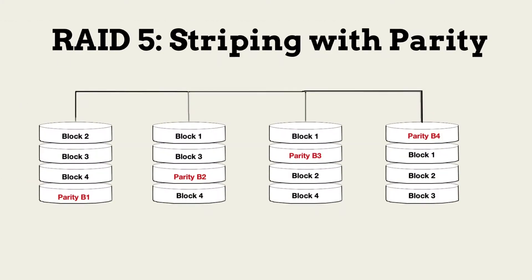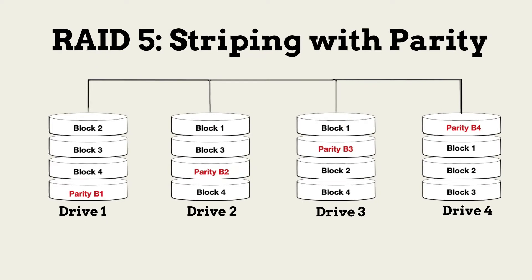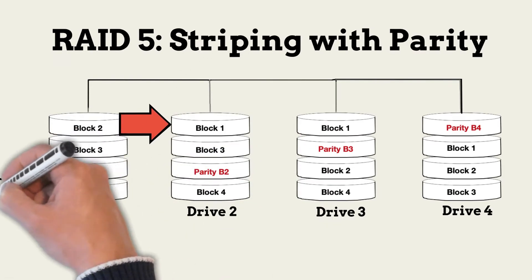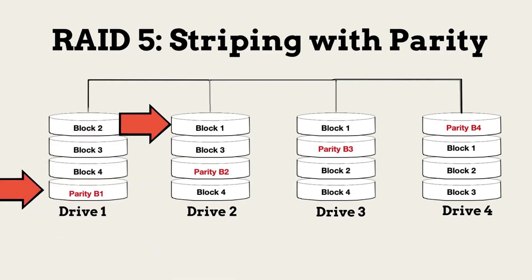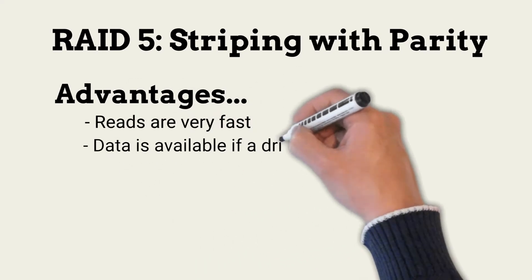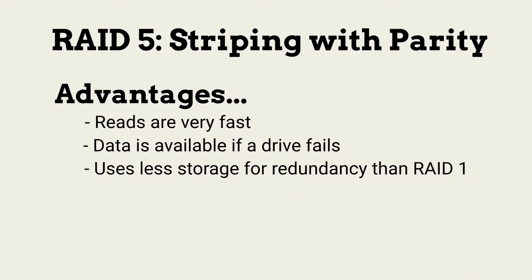RAID 5 is the most common use of RAID. Unlike RAID 1, RAID 5 requires at least three drives. Like RAID 0, data blocks are striped across all drives. Unlike RAID 0, RAID 5 also places a parity checksum on one of the drives for each block written. Reads from a RAID 5 array are very fast. If a single drive fails, there is no interruption to the supported business processes, and much less storage is used for redundancy than in RAID 1.